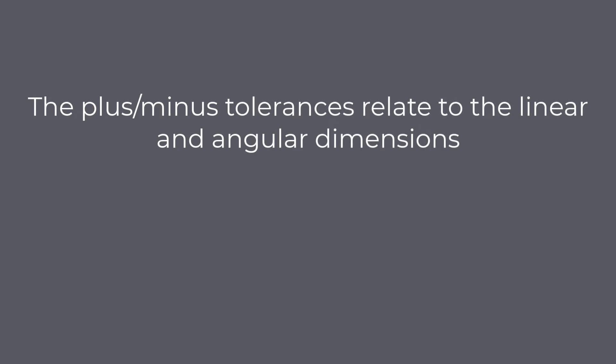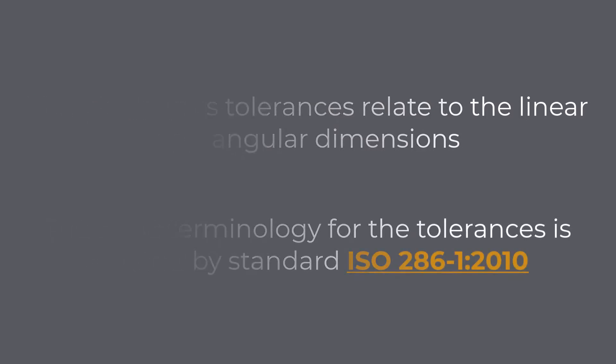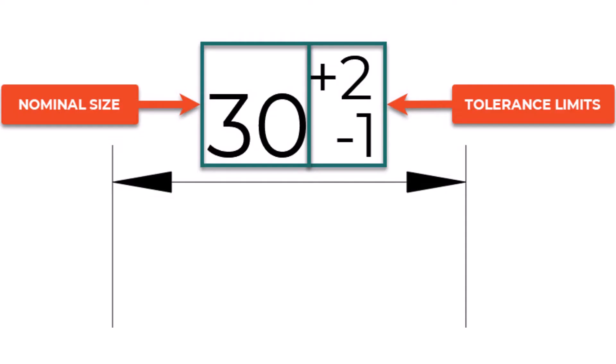Basic terminology. The plus-minus tolerances relate to linear and angular dimensions. Like everything defined on engineering drawings by standard, the basic terminology for tolerances is defined by ISO 286-1:2010. The tolerances are defined after the dimensional value. They can be defined with the signs plus, zero, minus, and plus-or-minus. The dimension of a feature on the component lies between the two limit deviations.